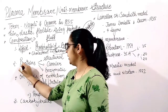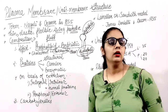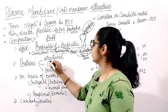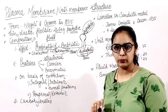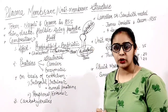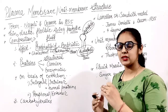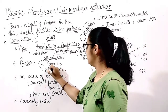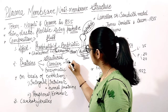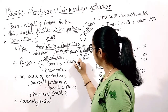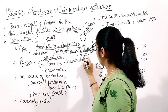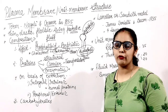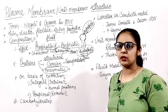The second component is proteins. The plasma membrane contains three types of proteins: structural proteins, carrier proteins for transportation — also called molecular or carrier proteins — and enzymatic proteins for enzymatic activities.